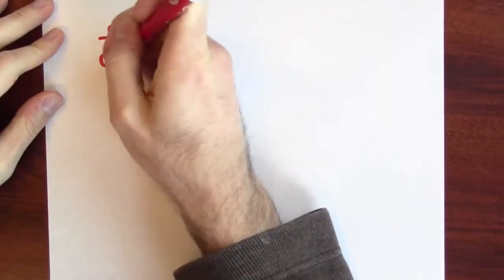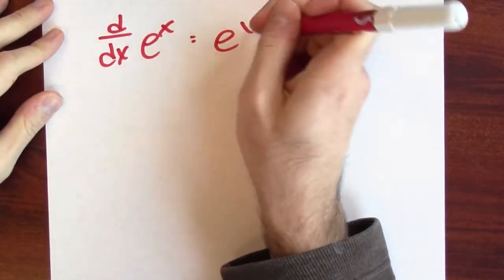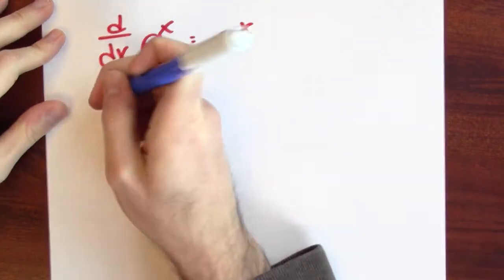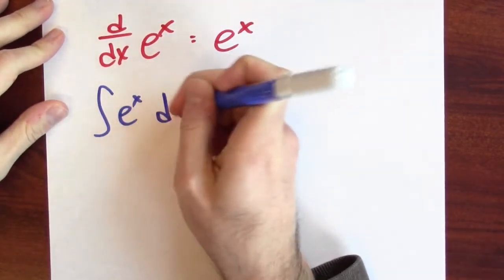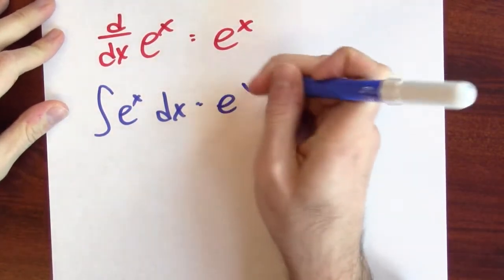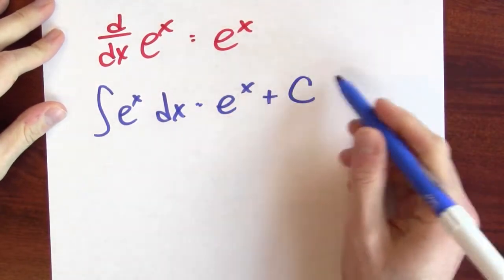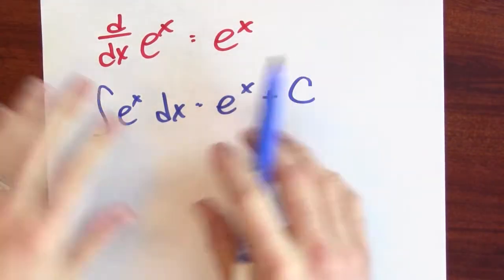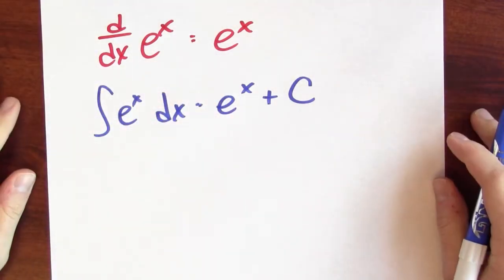The derivative of e to the x is itself, and consequently, the anti-derivative of e to the x must also be itself, plus some constant c, since this is a function that's defined on the whole real line.